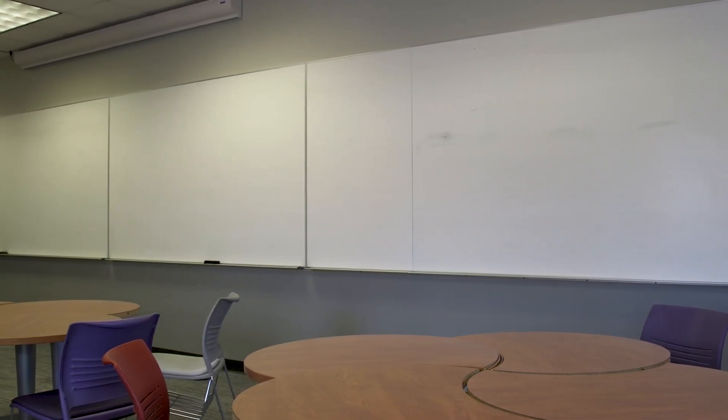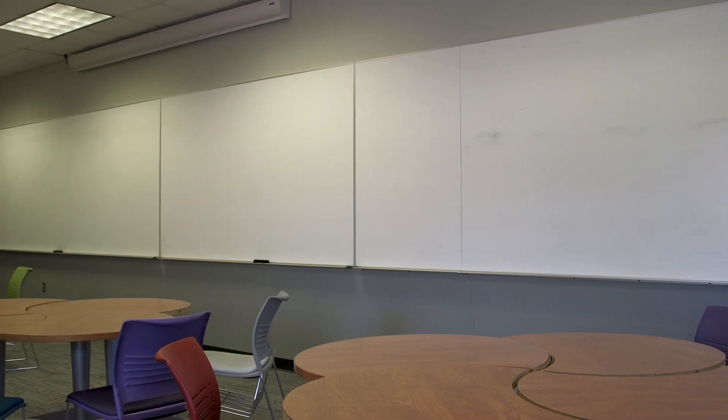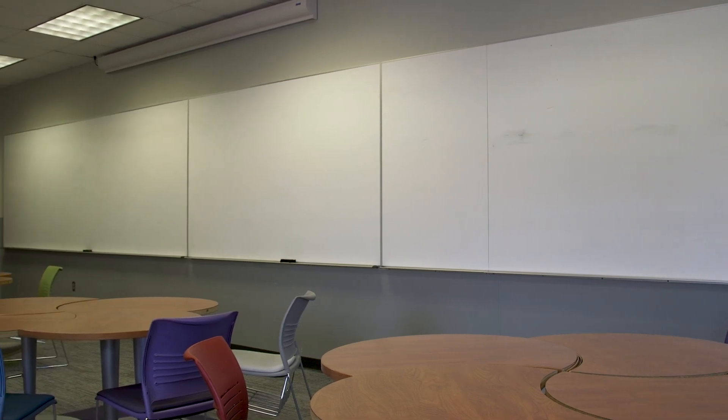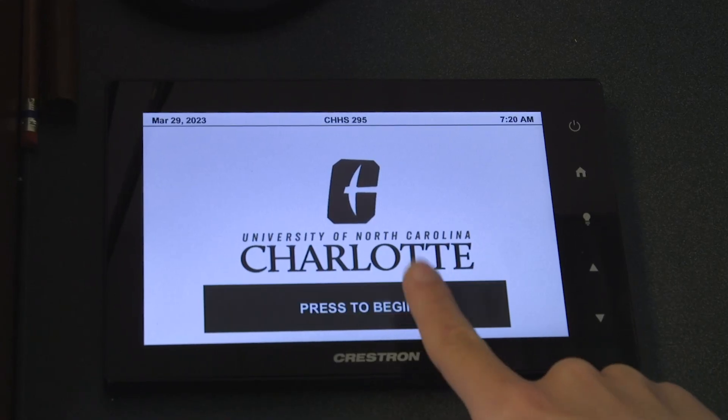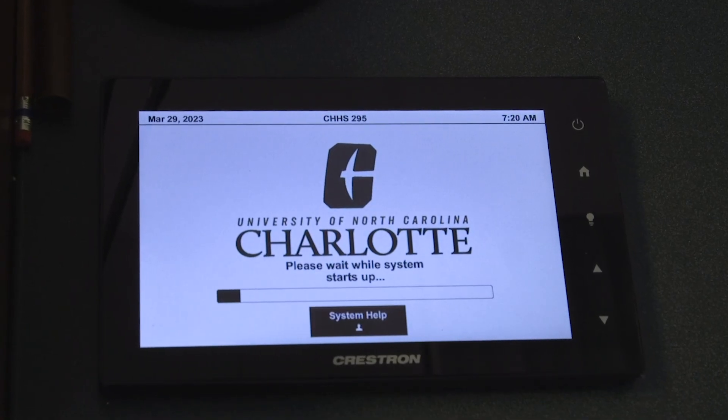In this classroom, we have whiteboards along the walls as well as tables that can be moved around for students to use. First, you will need to locate the control panel on your podium. On the screen, there'll be a button that says press to begin. Once you press this button, the projector screen will come down and turn on.